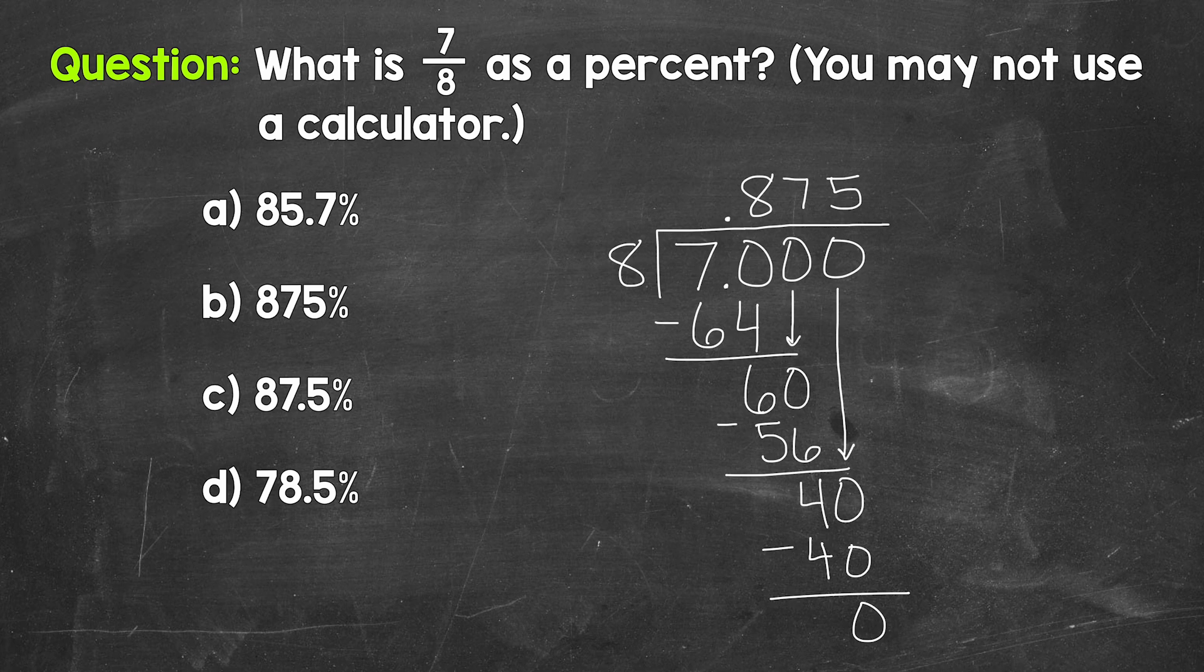Now we need to convert this decimal to a percent by multiplying it by 100. And again, we can multiply this by 100 by moving the decimal twice to the right.